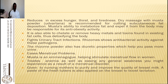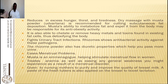Mooster fights urinary tract infections — the rhizome shows antibacterial activity against pathogens. The rhizome powder also has diuretic properties that help you pass more urine. It eases menstruation problems; mooster is an emmenagogue, helping stimulate menstrual flow in women. It treats anemia and eases general weakness that may result from menstrual disorders. Given to nursing mothers, it purifies and improves the quality of breast milk. A paste of the fresh tuber is also applied on the breast to boost lactation.